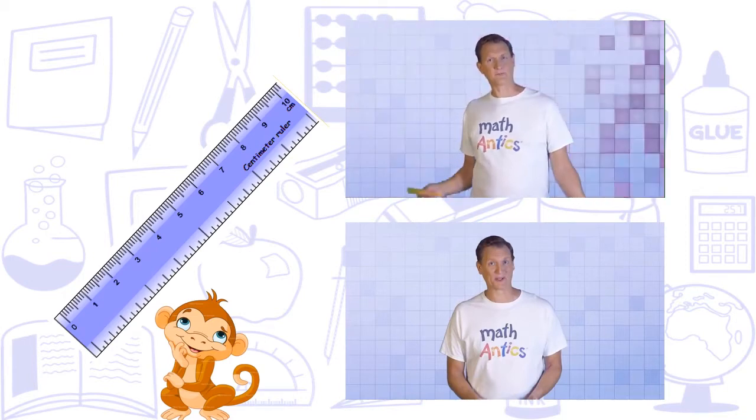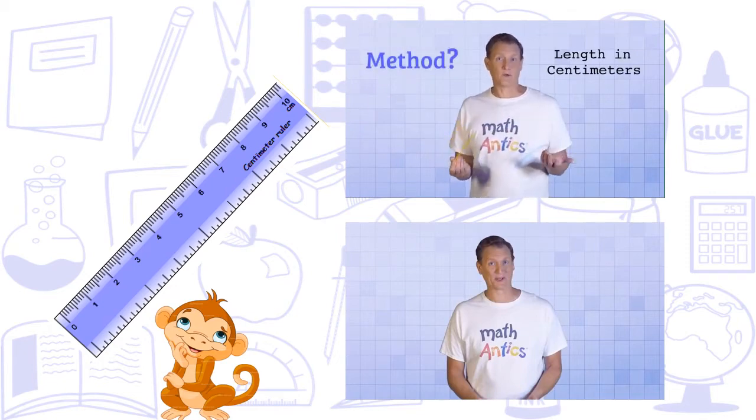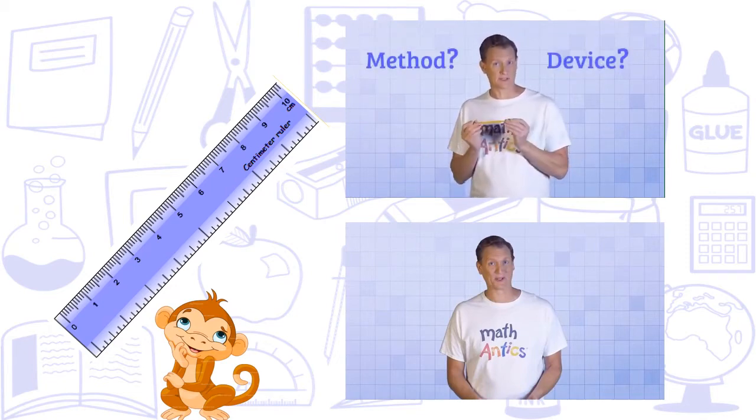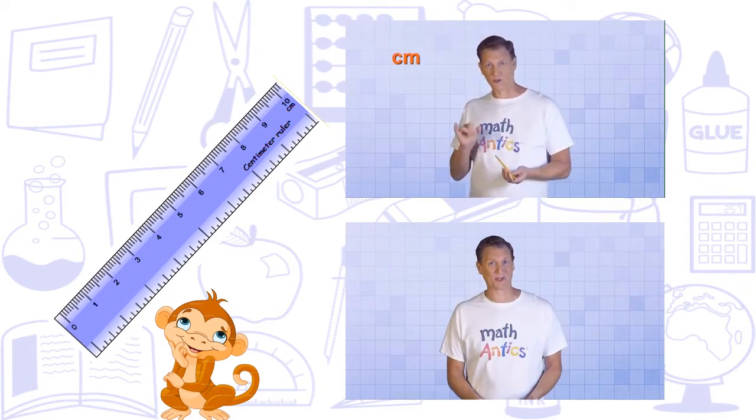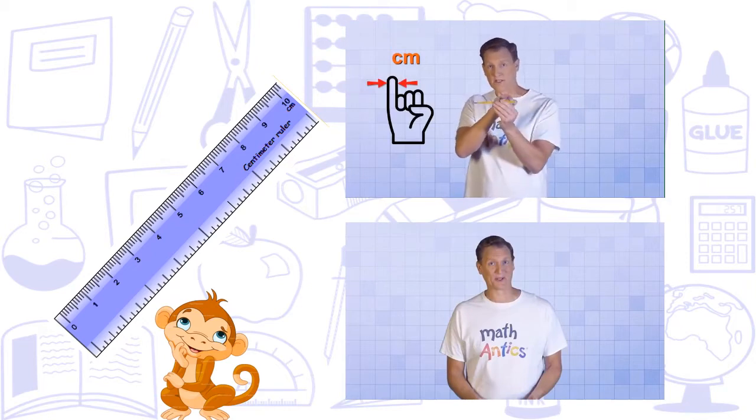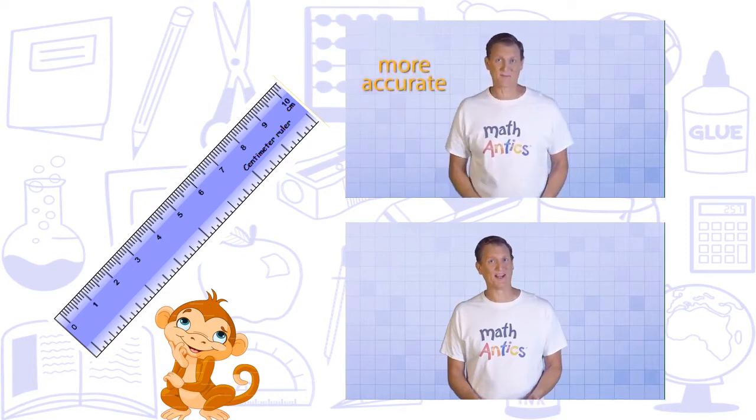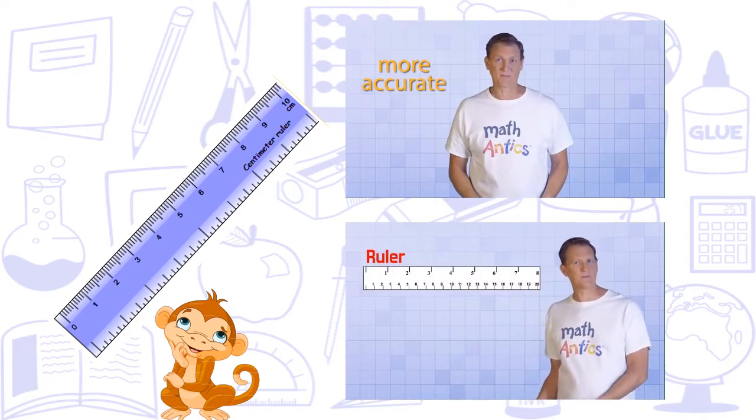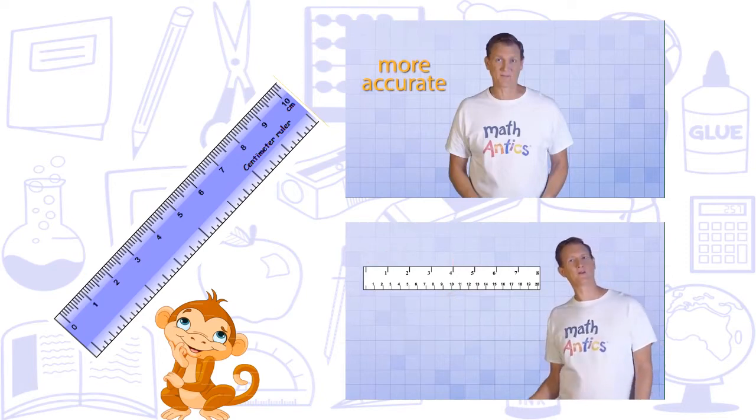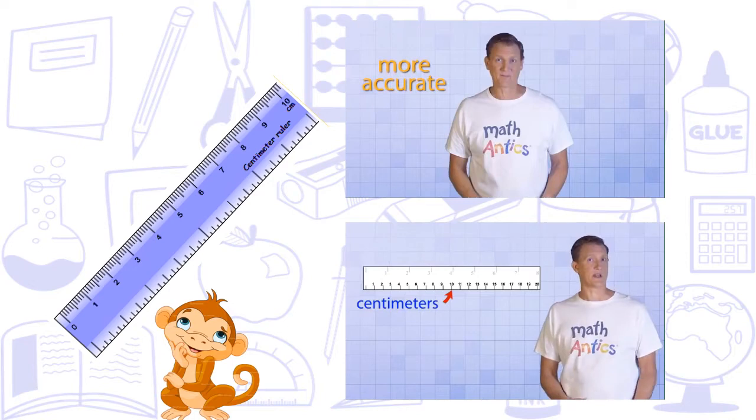Suppose we're given an object, like this pencil, and we're asked to measure its length in centimeters. To do that, we'd need some method or device that will tell us how many centimeters long the pencil is. Remembering that a centimeter is roughly the width of a pinky finger, I could just use my finger as that device and see how many finger widths it takes to get from one end of the pencil to the other, but something a little more accurate would be nice.